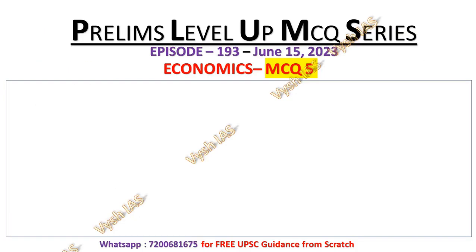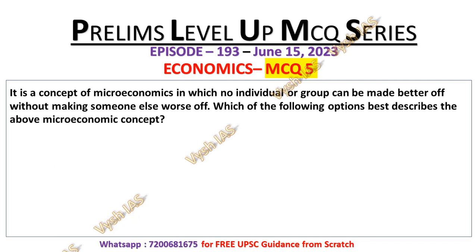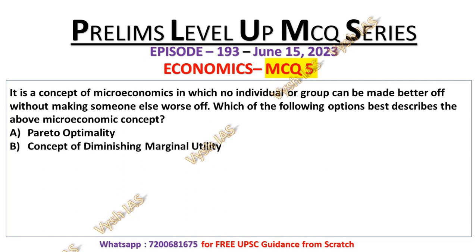Last MCQ of today's class. It is a concept of microeconomics in which no individual or group can be made better off without making someone else worse off. You have to identify the option which best describes the above microeconomic concept. Option A: Pareto optimality. B: Concept of diminishing marginal utility. C: Taylor's rule. And D: Paradox of thrift. I will give you 10 seconds to try to answer this question.